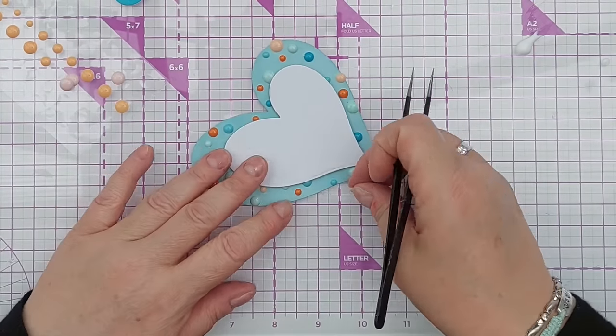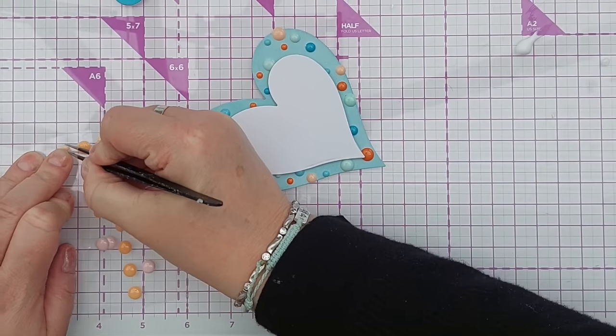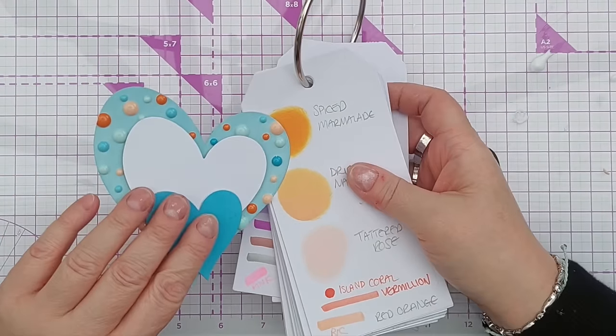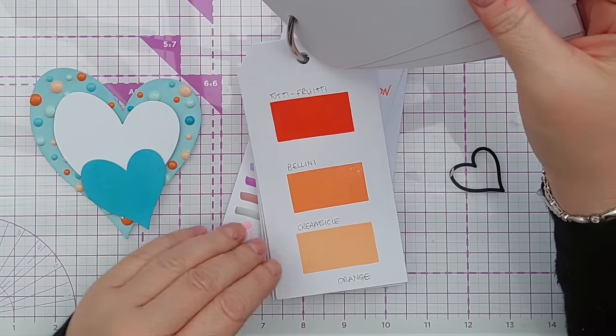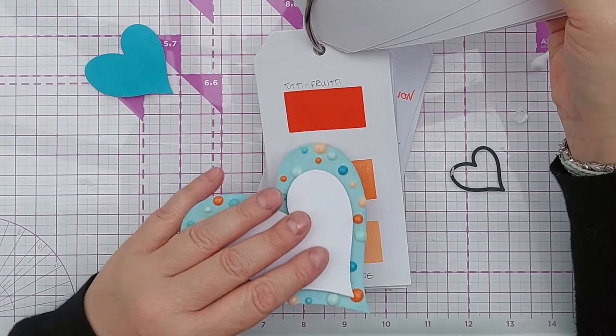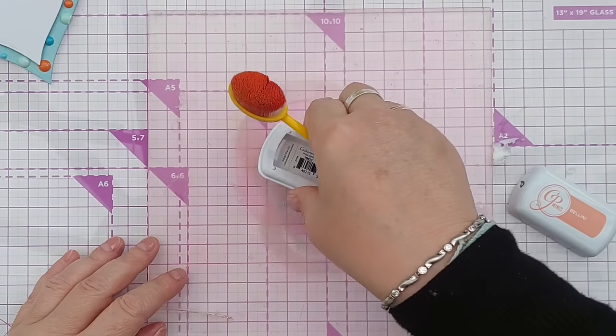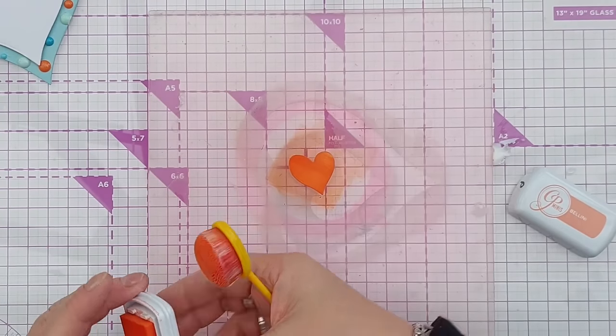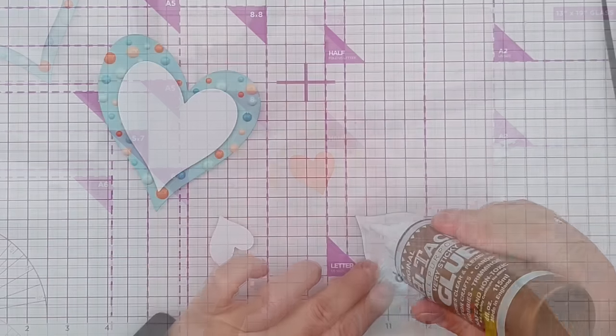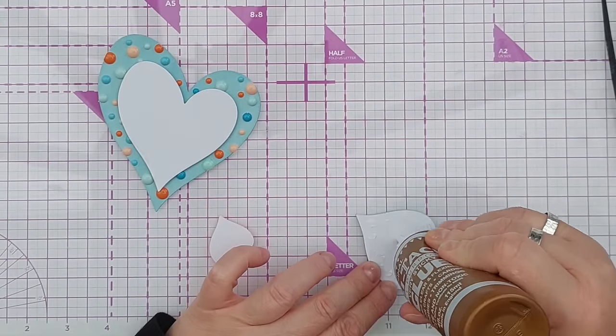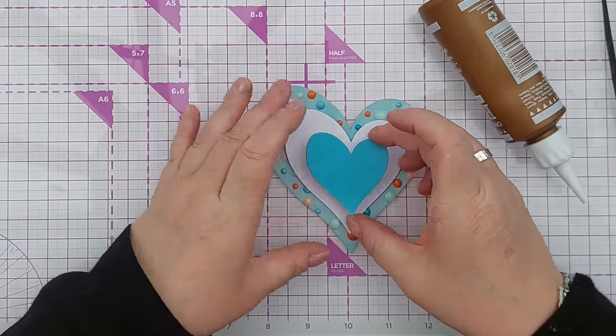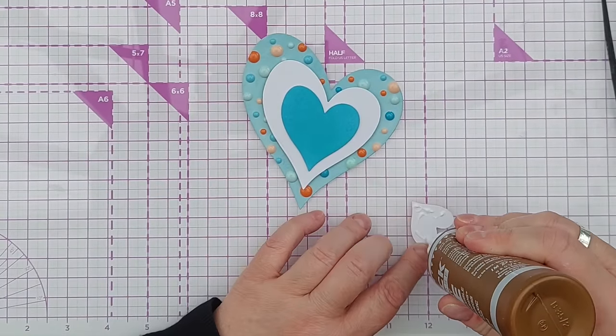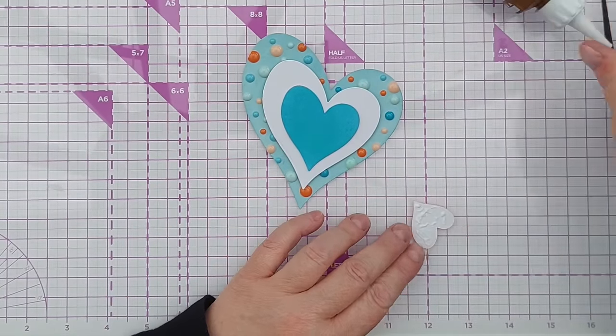Once I'd finished adding all my enamel dots, I decided I wanted to bring a bit of the orange from the background into the foreground. So I brought out my color swatch tags and looked through my oranges to see which ink would most closely resemble the dark orange enamel dots. I chose Bellini from the Catherine Pooler ink collection and inked a heart I had cut from smooth white cardstock with the smallest die in this set. I then added the Salvage Patina heart—I put two other die cut hearts underneath to give it a little lift—and then added the orange heart straight on top.